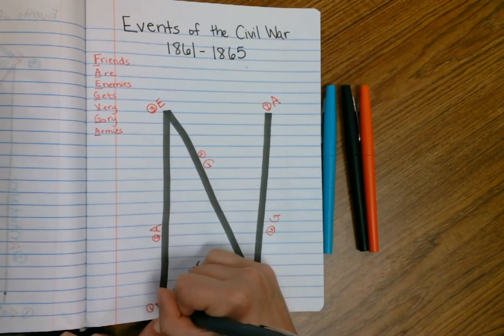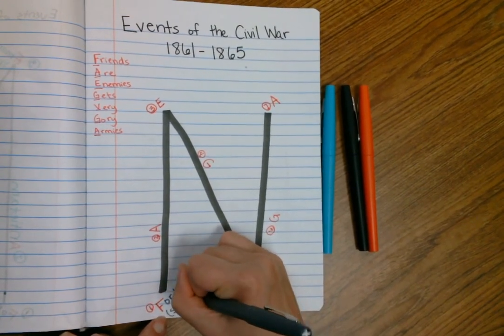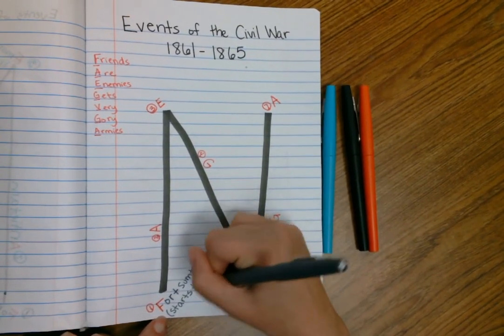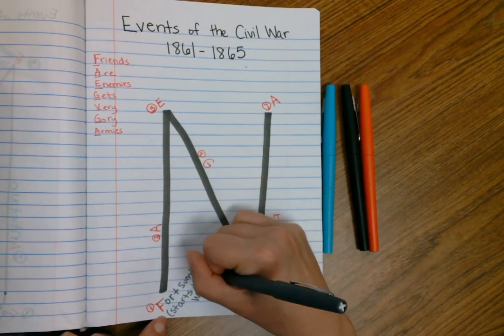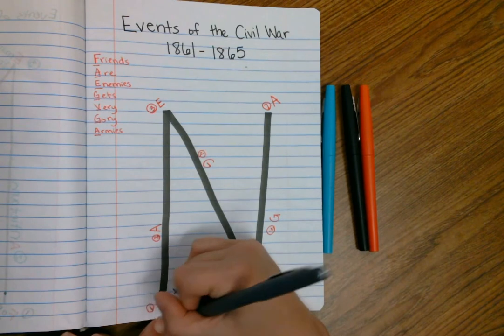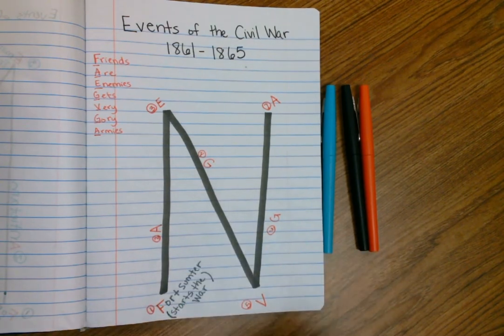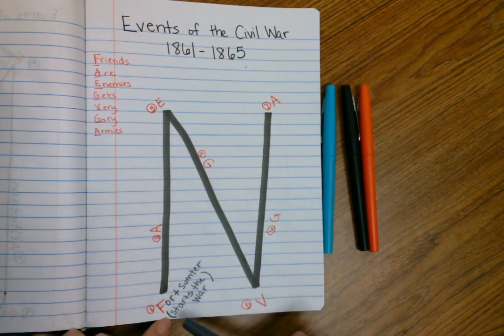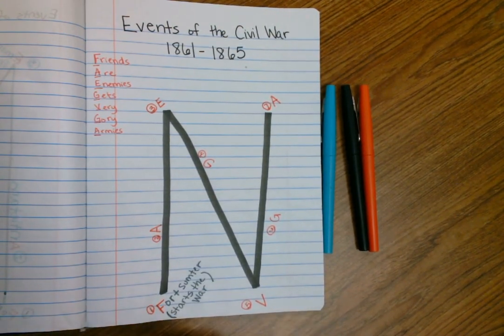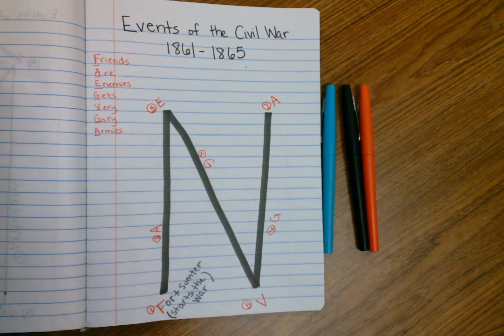And this starts the war. This is the first time where we're going to have the Confederacy fire on a federal fort seizing it in South Carolina. And so the battle at Fort Sumter starts the war right after the election of Abraham Lincoln.